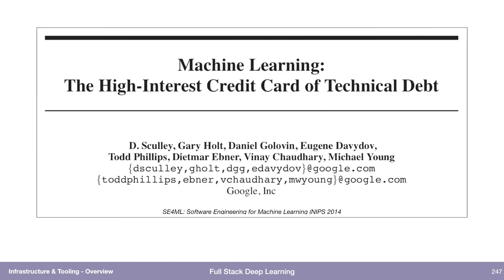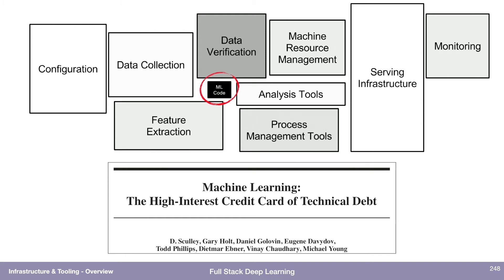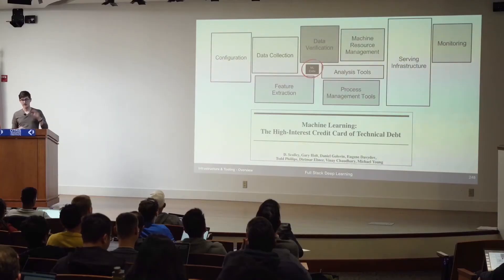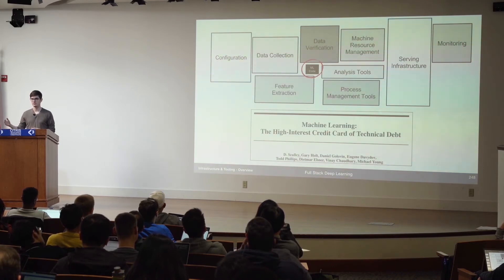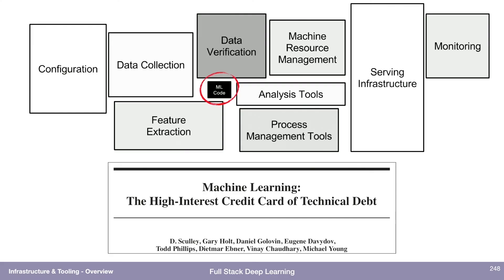An observation of this fact was made a few years ago by people at Google in a seminal paper called 'Machine Learning: The High Interest Credit Card of Technical Debt.' In that paper there's a striking figure: if you look at the machine learning system as a whole, the actual model code — the part taught in Andrew Ng's classes, fast.ai, and so on — is actually quite small. There's a lot of other code around it that configures the system, collects and labels data, extracts features, handles testing, provisions resources, serves the model, and monitors it.